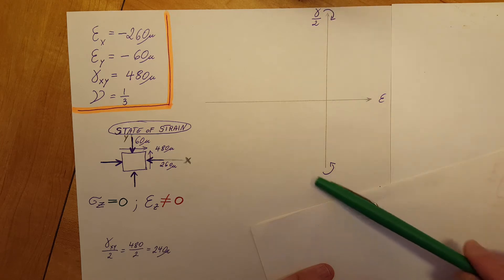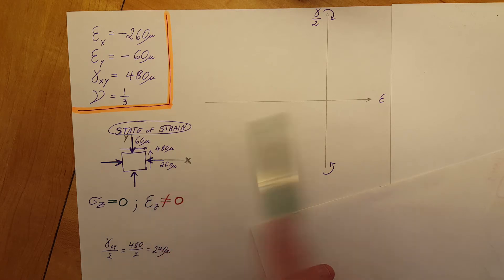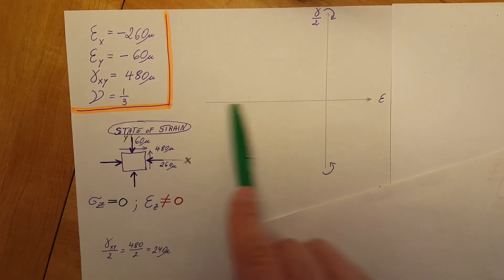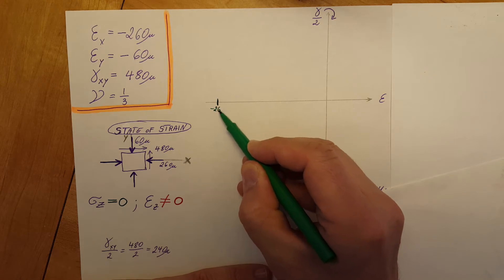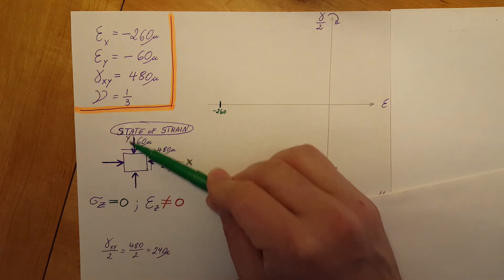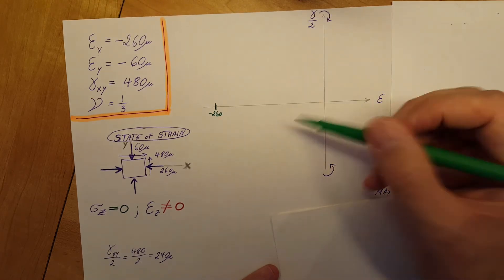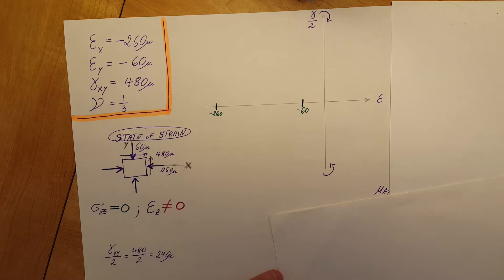These two little arrows show us how to transfer our state of strain to Mohr's circle. The first information: in the x direction the normal strain is negative 260, so we mark negative 260 on the axis. Next, in the y direction the normal strain is negative 60, so we mark negative 60 — somewhere closer to zero. We now have our normal strains marked on our Mohr's circle.